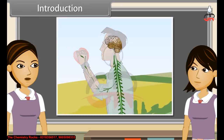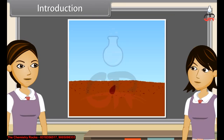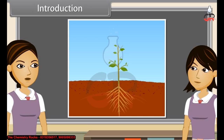Coordination is the working together of the various organs in a systematic manner, so as to produce a proper reaction to the stimulus. As we already know, something is called living when a movement is observed in it. This movement can be due to growth, as in plants, where a seed germinates and grows.